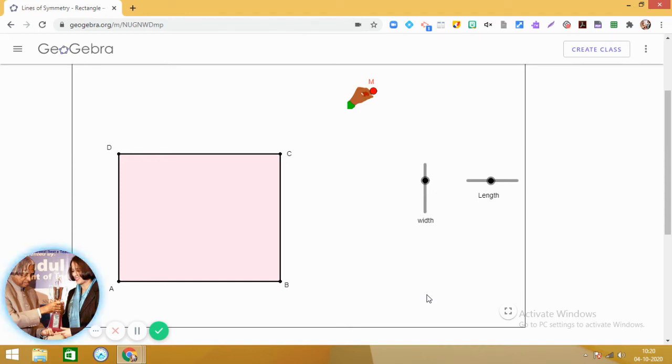Hello dear students, today we are going to do an exploratory activity on the topic exploring the lines of symmetry in a rectangle. So here you can see ABCD is a rectangle and we need to see how many lines of symmetry are there in a rectangle.